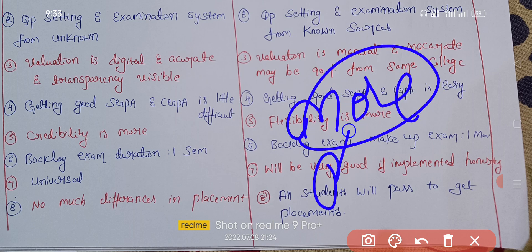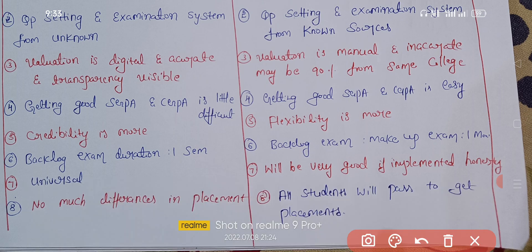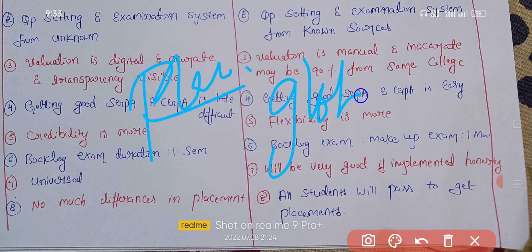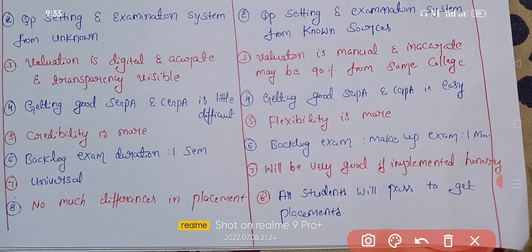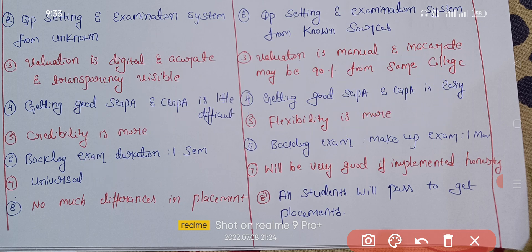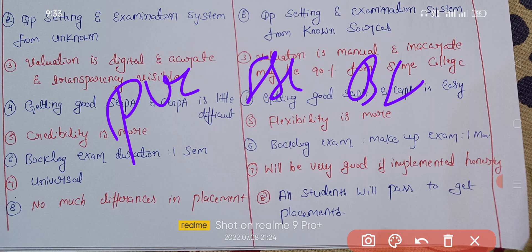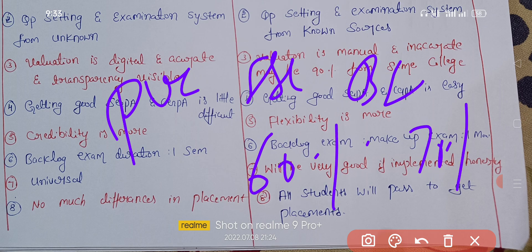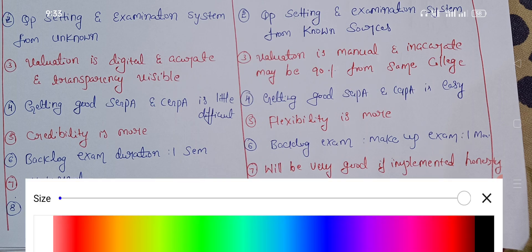Regarding placements, there is not much difference between VTU-affiliated and autonomous colleges. In autonomous colleges, the agenda is often to pass all students and focus on placements. In VTU, placements are more global — companies come and take students based on overall aggregate, typically requiring 60% or 70% throughout in PUC, SSLC, and degree for good packages.